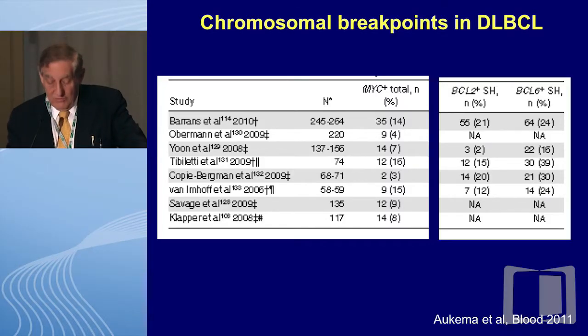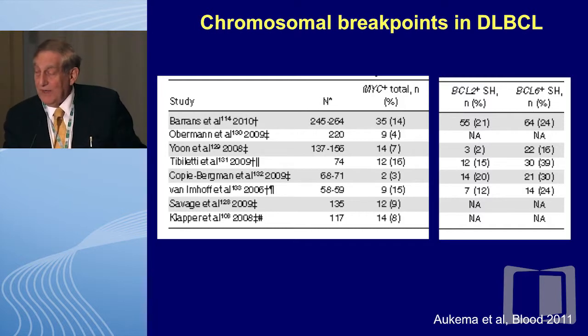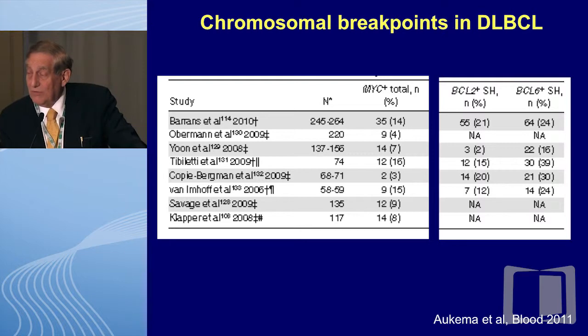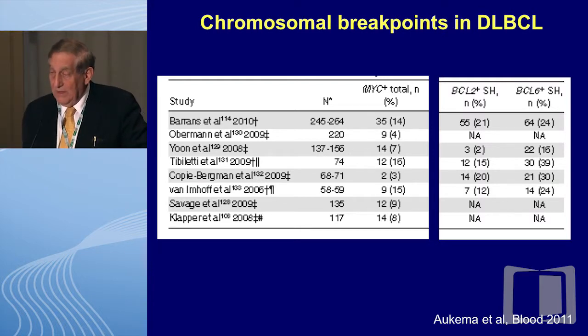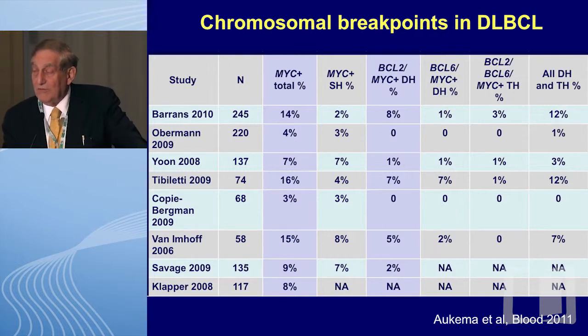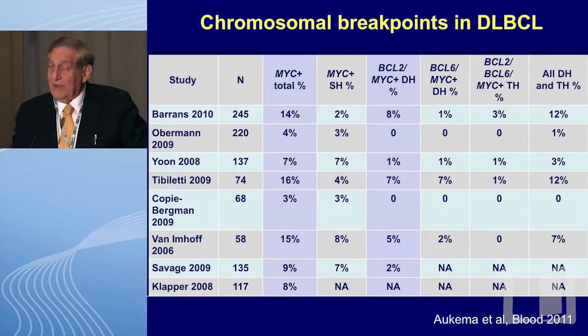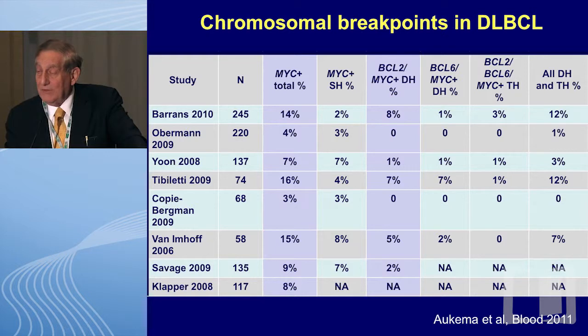So what are some of the chromosome breakpoints in diffuse large cell lymphoma? About 14% of patients will have a positive MYC, 21% will have a BCL2, and about 24% will be BCL6 positive. Our emphasis today is on the breakpoints in diffuse large cell lymphoma and our emphasis on MYC positivity. About 14% of diffuse large cell will be MYC positive. Very few of these MYC positive diffuse large cell lymphomas will be a single hit — SH represents single hit.